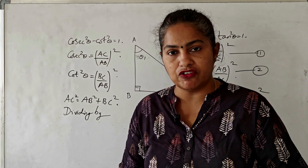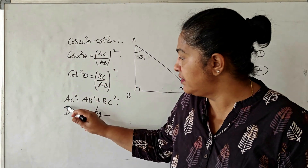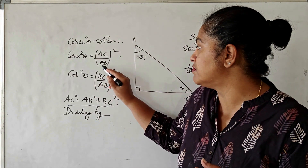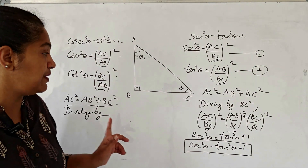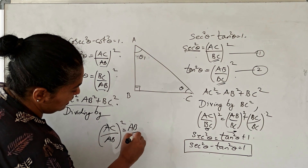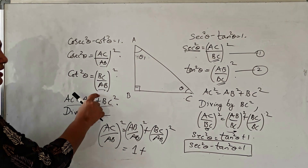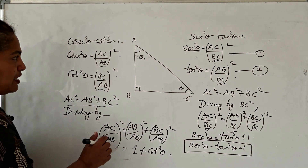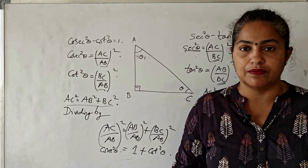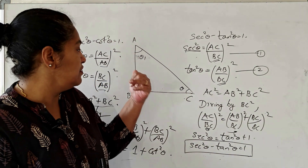The third identity is cosec²θ - cot²θ = 1. I write what cosec²θ and cot²θ are from the triangle, and apply the Pythagoras theorem. The denominator of these terms is AB², so I divide by AB² across, giving (AC/AB)² = (AB/AB)² + (BC/AB)². AB/AB is 1, BC/AB is cot θ, and AC/AB is cosec θ. Rearranging gives cosec²θ - cot²θ = 1. Use the Pythagoras theorem, the definitions from the right angle triangle, divide accordingly, and rearrange.